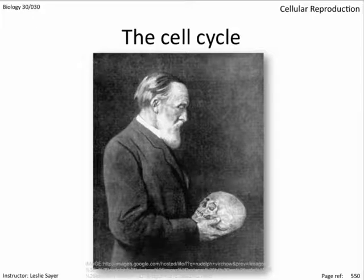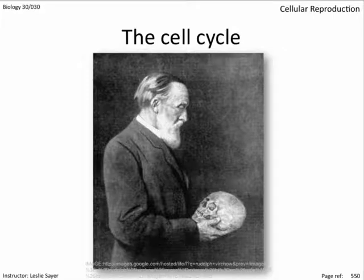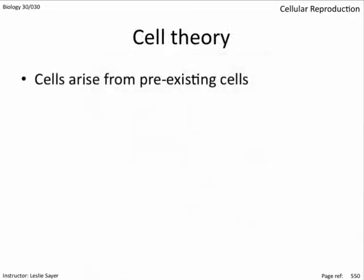New cells arise from the division of other cells. This theory flew in the face of the accepted science of the time — spontaneous generation — the idea that life would simply appear at God's will from non-living matter. Obviously this heretic had to be burned at the stake, if not for some of the others who contributed to cell theory around that time.